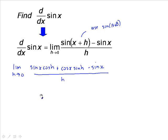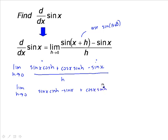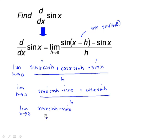On its own, this doesn't really do much for us. We don't see any common factor that can be removed, because there is none. But if we rewrite this, we'll get the limit as h approaches 0 of: sine x·cos h minus sine x, plus cos x·sine h, all over h. Then by splitting the fraction: (sine x·cos h − sine x)/h plus cos x·sine h / h.